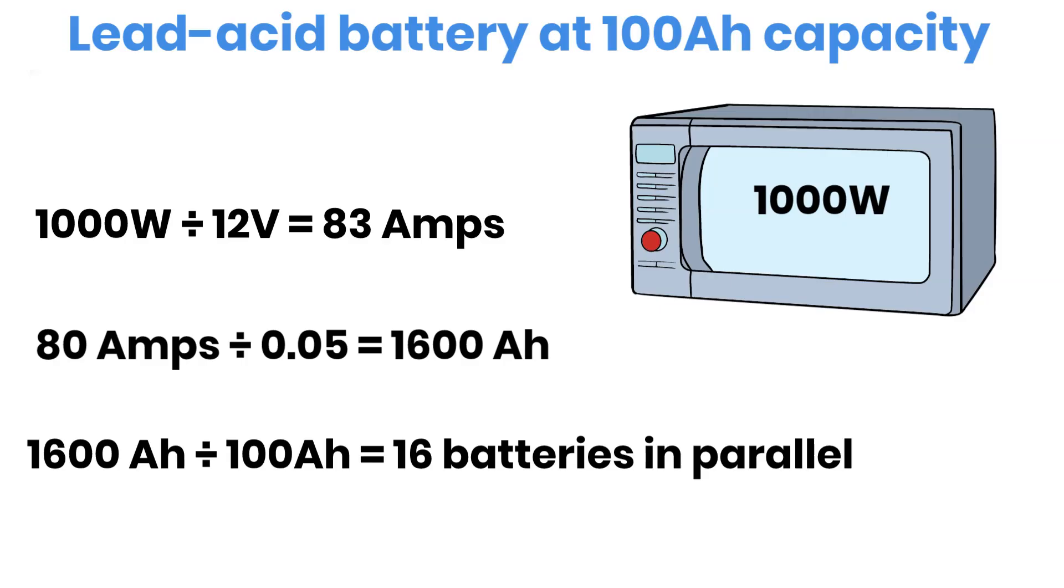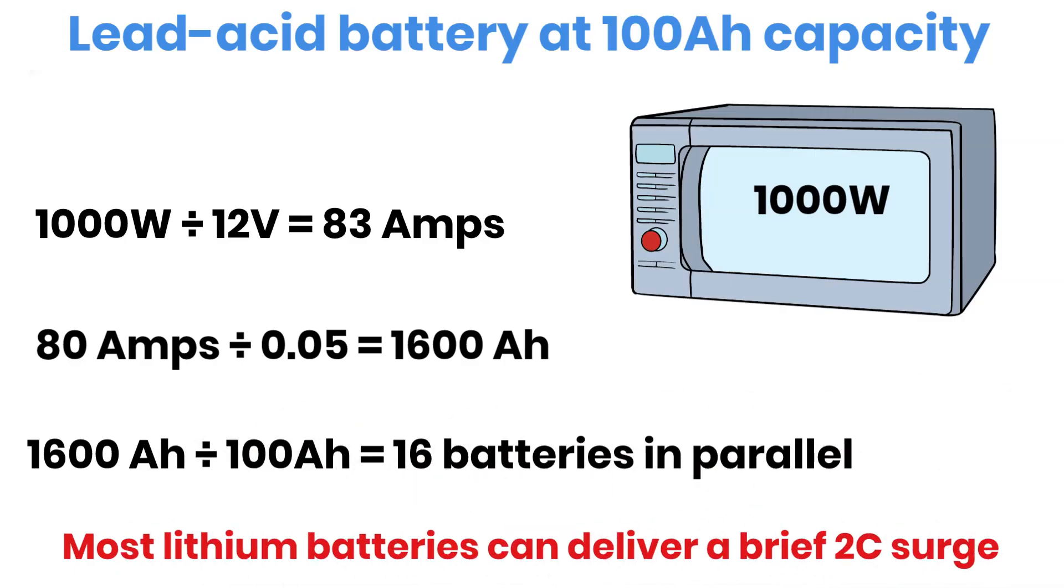Lithium batteries don't face this limitation as much, because they support higher current draw and have a BMS to protect them. Most lithium batteries can also supply a short surge of around 2C for a few seconds, depending on the chemistry.